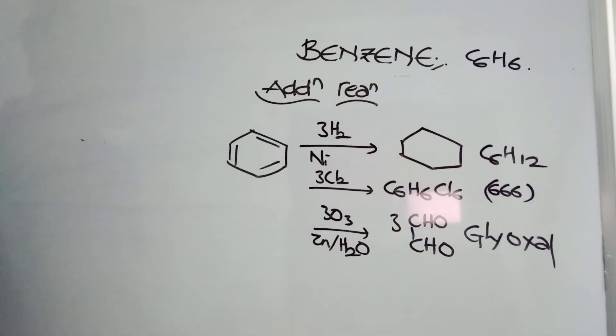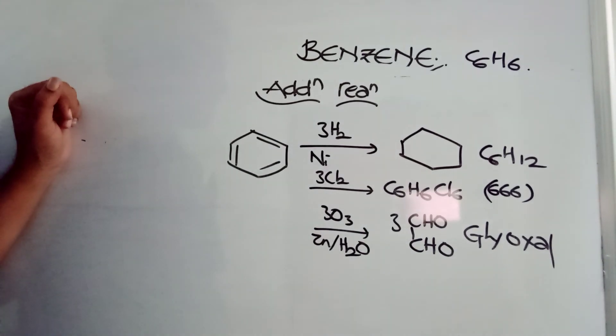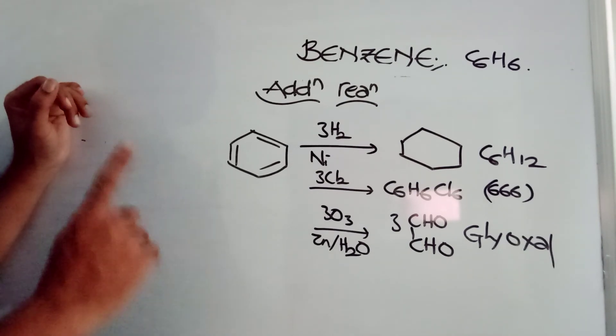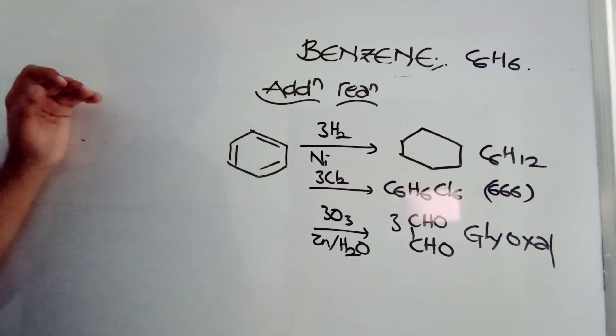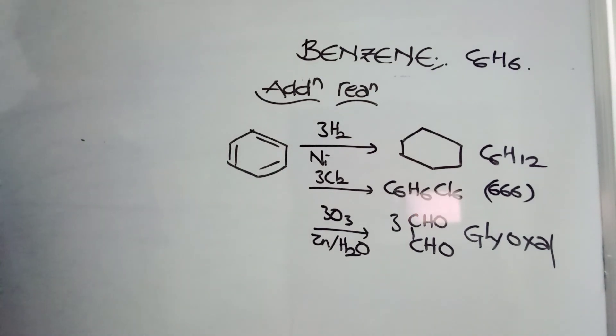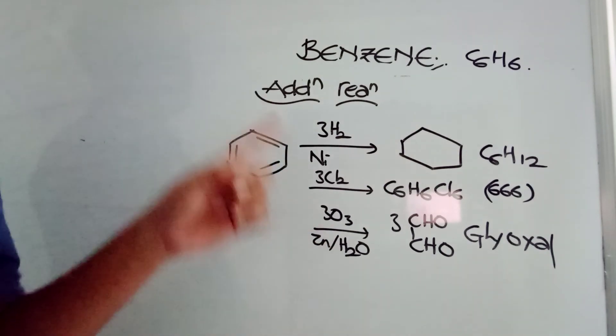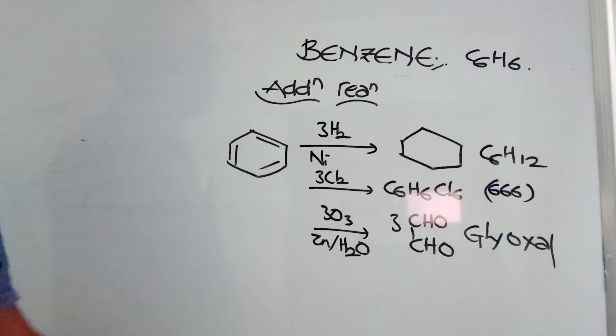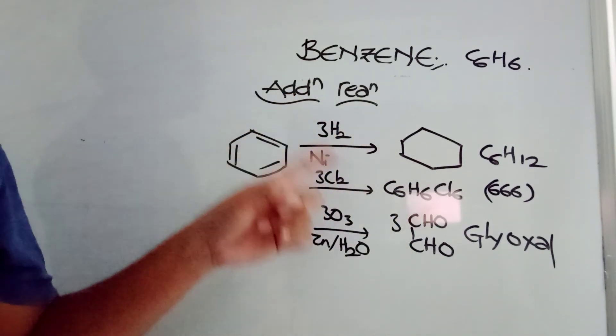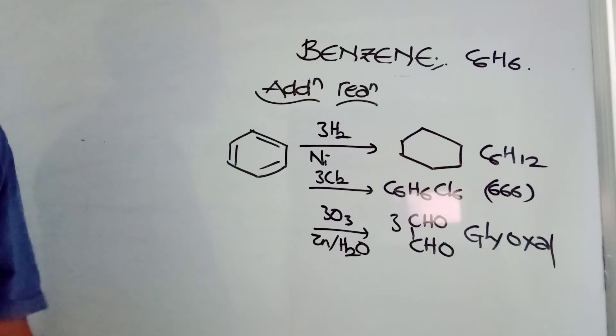So benzene, three additional reactions are very special. In another video I added all the electrophilic aromatic substitution, you can check that one. And here benzene methods of preparation and benzene three addition reactions I mentioned, which are very special. Benzene generally prefers substitution reactions because benzene is a very stable compound because of its aromatic resonance stability. But under special conditions, it is possible to get three moles of hydrogen reaction, three moles of chlorine reaction and three moles of ozone reaction.